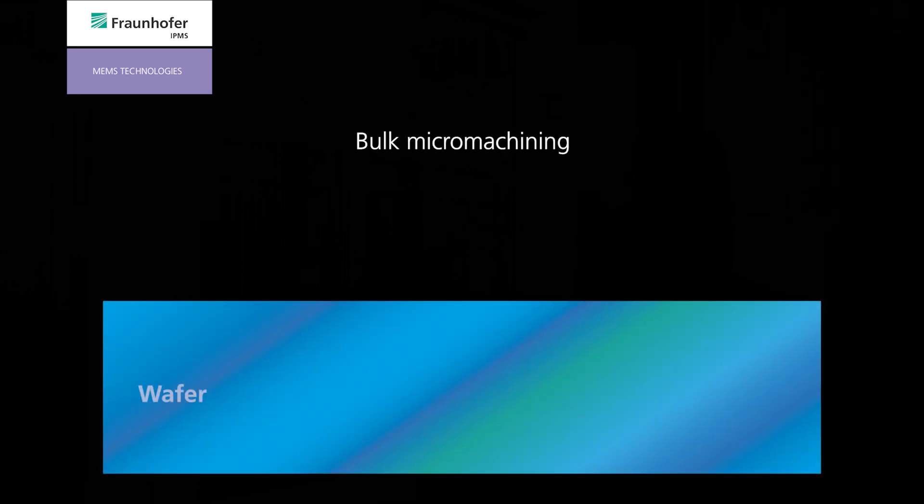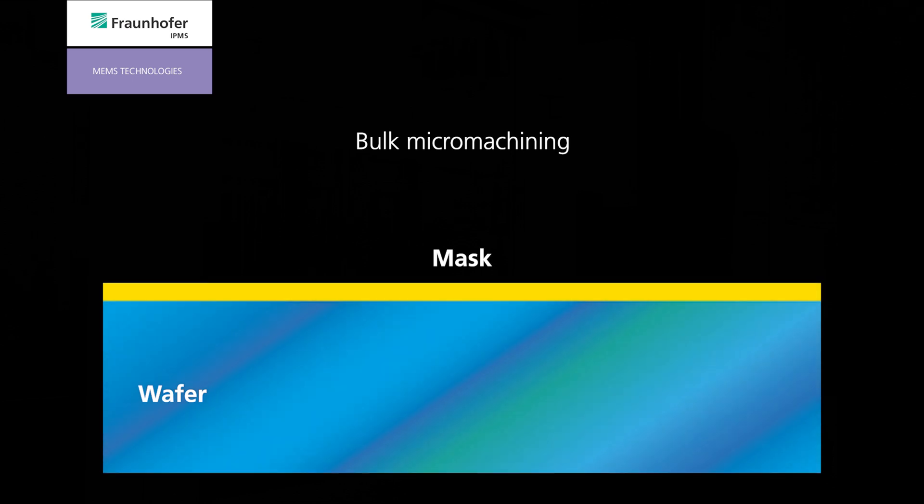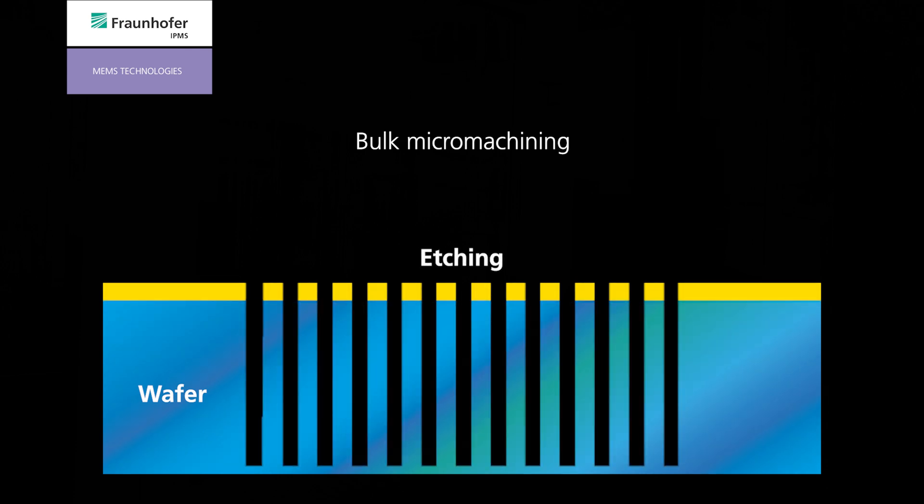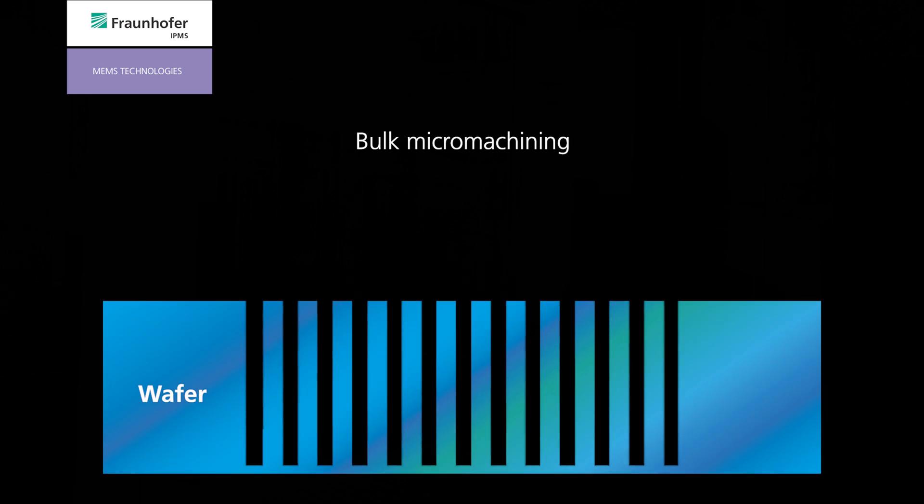Another technology approach is bulk micromachining. There you go another way - you use the bulk of silicon, the wafer itself, and etch deep structures into the silicon. This means you use high aspect ratios, usually 30 to 40, and you have high requirements for the etch tools and processes. We increase our bonding capabilities for high-performance devices.